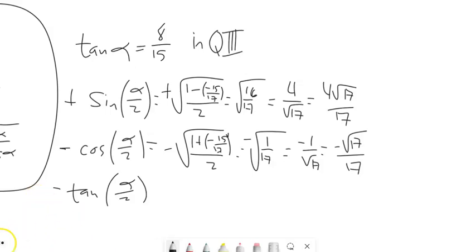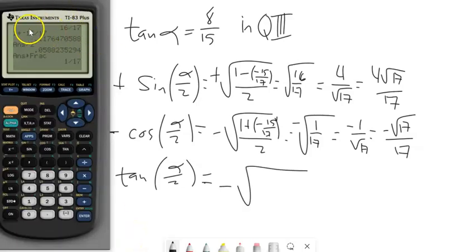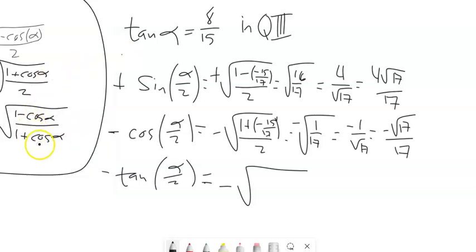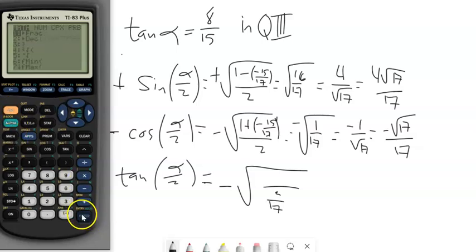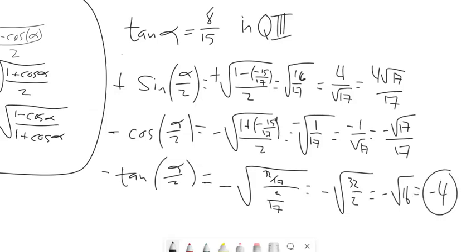These are exact answers — that's what will be expected. For tangent of (alpha/2): it's negative, using the formula (1 minus cosine alpha) over (1 plus cosine alpha). The numerator gives 32/17 and the denominator gives 2/17; the seventeenths cancel leaving 32 over 2 = 16. The negative square root of 16 is negative 4. So tangent of (alpha/2) equals negative 4.